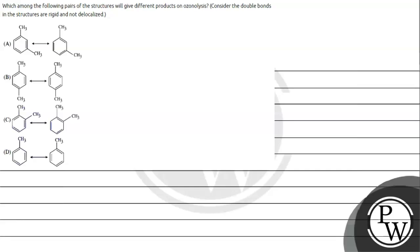Let's read this question. The question says: which among the following pairs of structures will give different products on ozonolysis? Consider the double bonds in the structures are rigid and not delocalized.